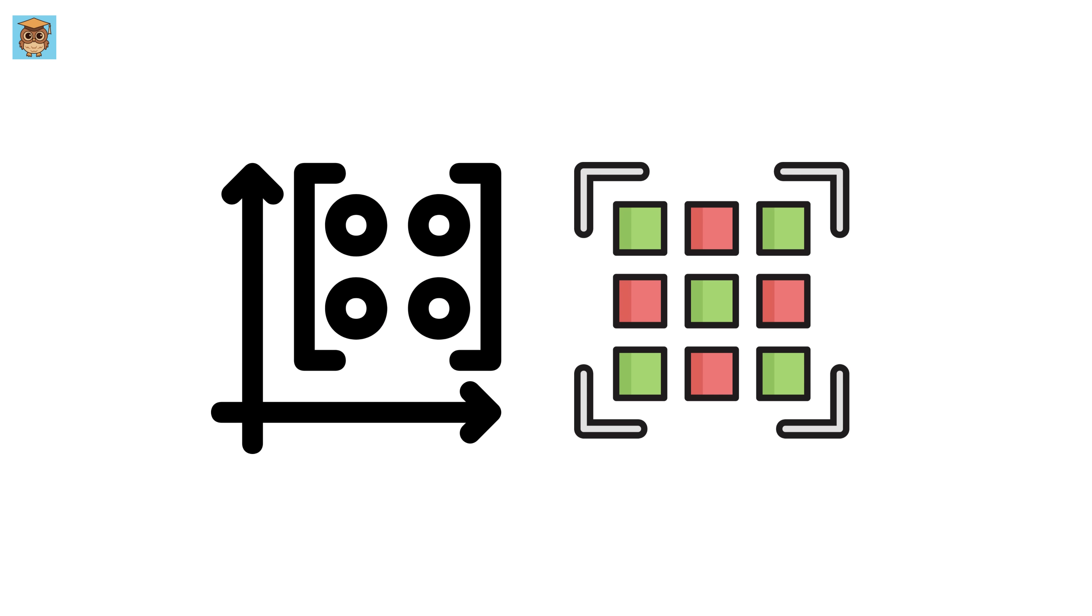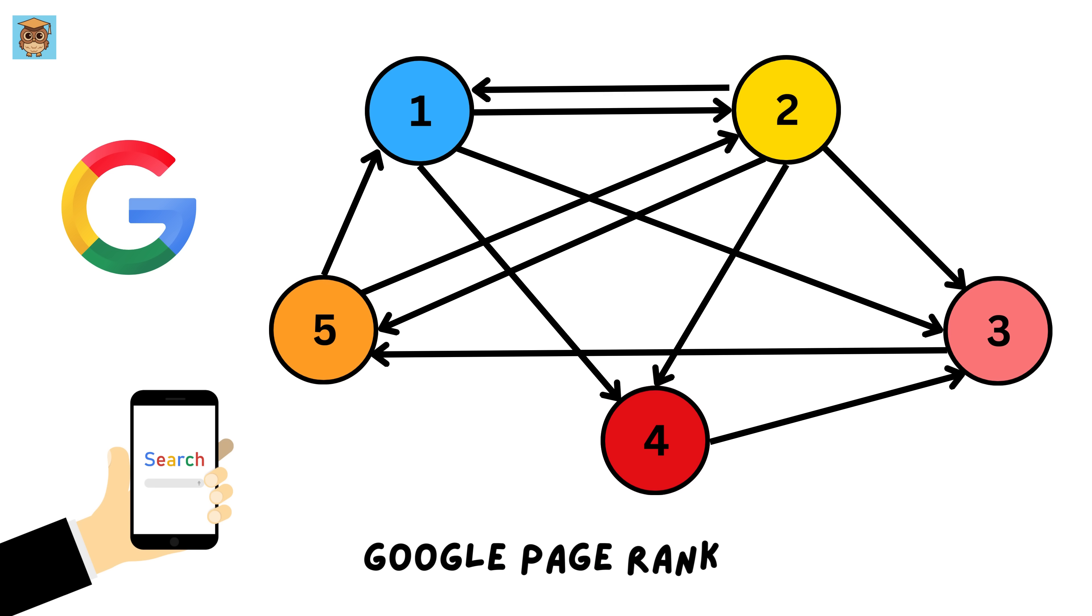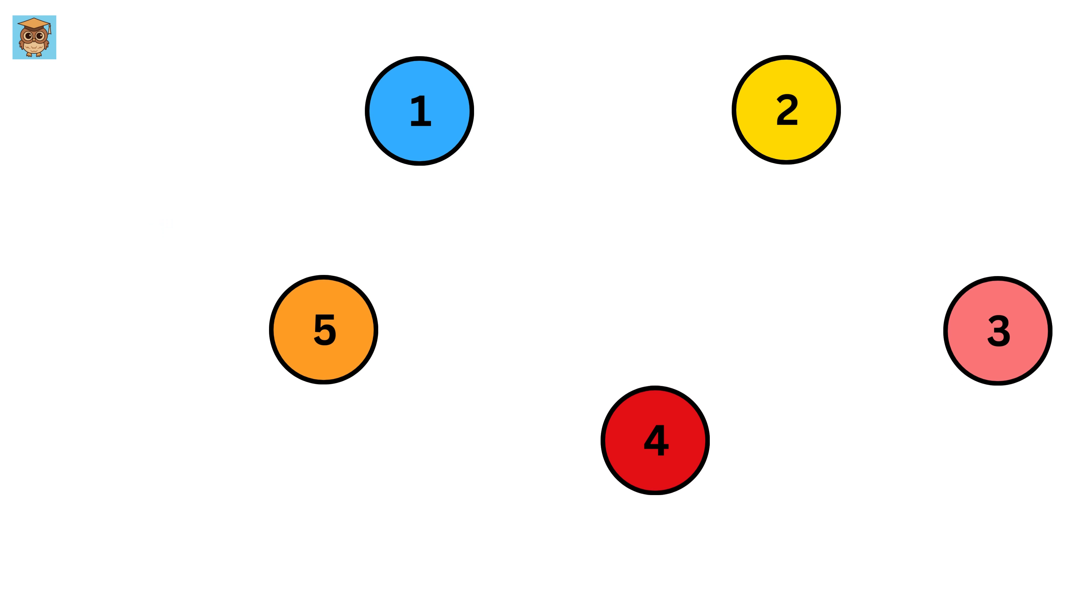Let's look at a real world application of them. One surprising place where they show up is the PageRank algorithm of Google, at least the way it used to work in the 90s. Assume we have five websites numbered 1, 2, 3, 4, and 5.